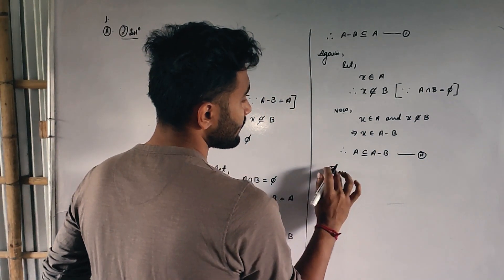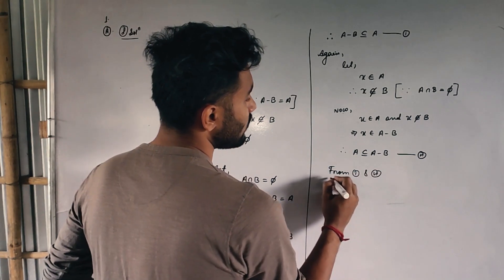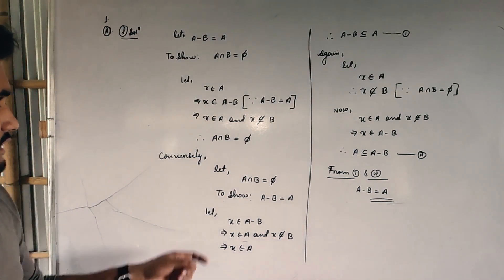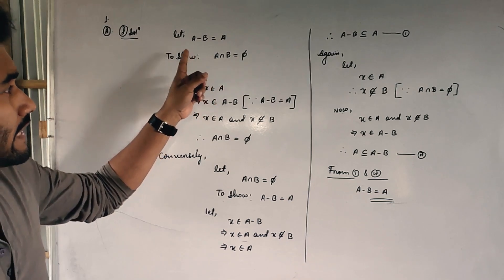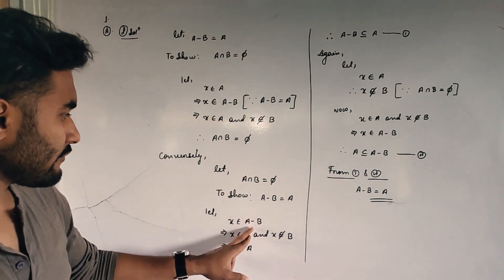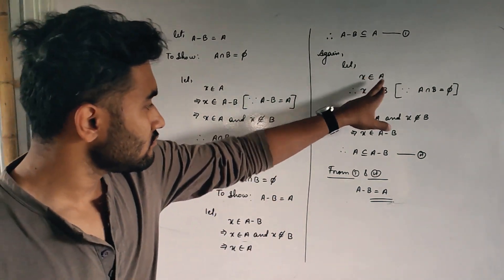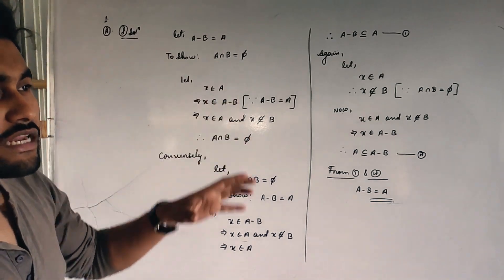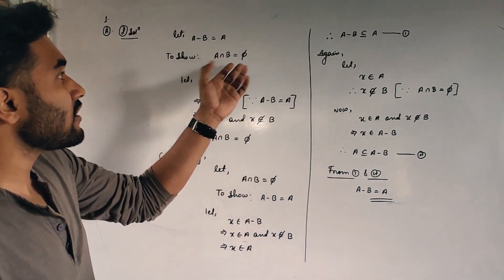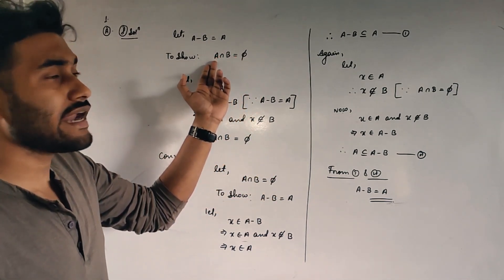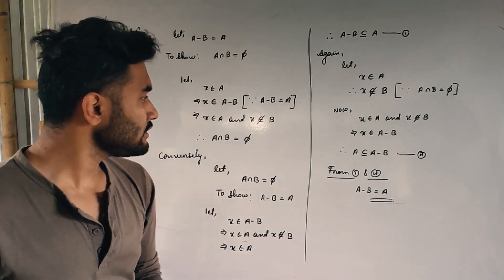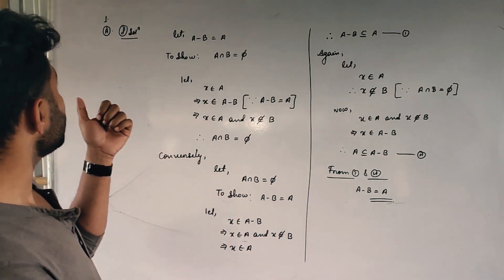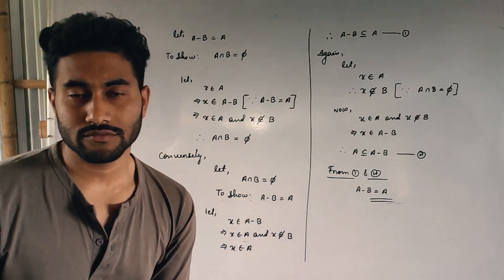From equations 1 and 2, we can say that A minus B equals A. That is the complete proof. In the first part, there was a potential logical error — you should not start with 'let x belong to A intersection B' because you are trying to show A intersection B equals phi. Usually we start from the left-hand side and go to the right-hand side, or vice versa, but not by assuming what we need to prove. In the next class, we will solve questions (e) and (f). Thank you.